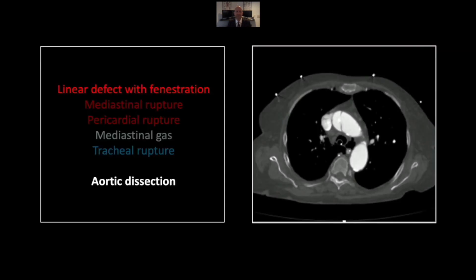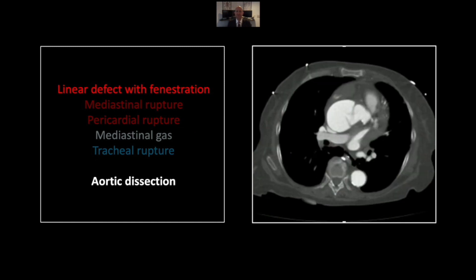Our next case is an aortic dissection with many complications. Here is the flap in the upper portion of the ascending aorta. You can see a fenestration within it, suggesting there's free flow between the true and false lumens. Lower down, in the region of the aortic root, you see another flap with another fenestration. Obviously there is dilation of the aorta at this level as well.